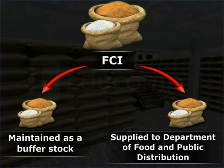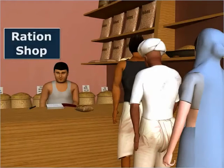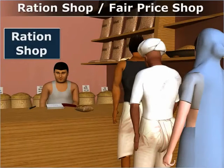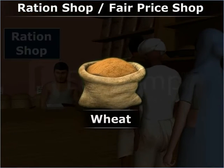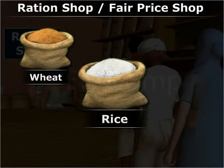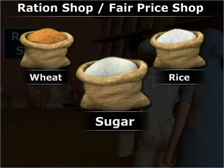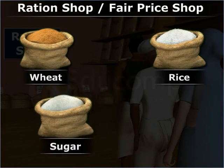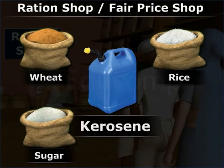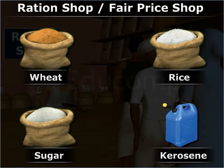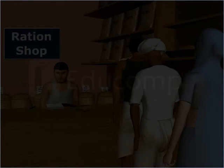The ration shops, also known as fair price shops, supply wheat, rice, sugar, and kerosene of a standard quality at affordable prices. The purpose of these shops is to ensure food security to the poor.